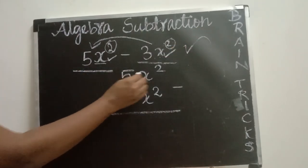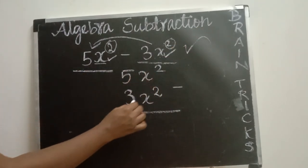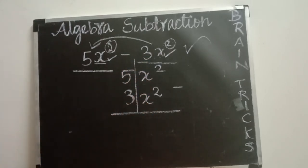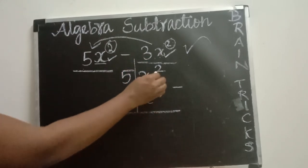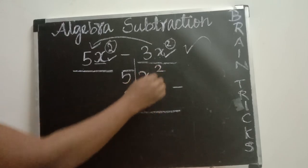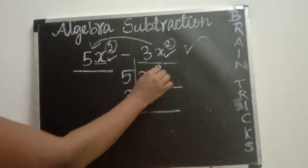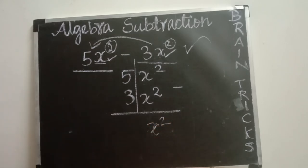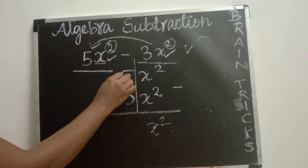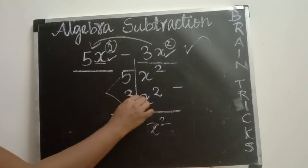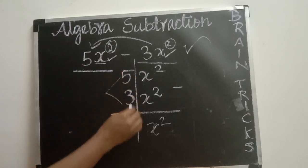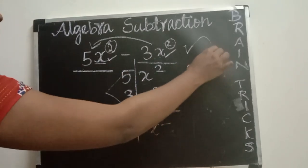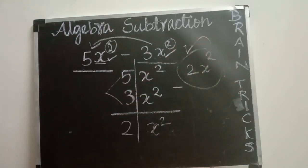Now, 5x power 2 minus 3x power 2. It is like addition only — you should not touch the variable. Just write the variable as it is: x power 2. Then do the numerical subtraction: 5 minus 3 which is 2. So the final answer is 2x power 2.